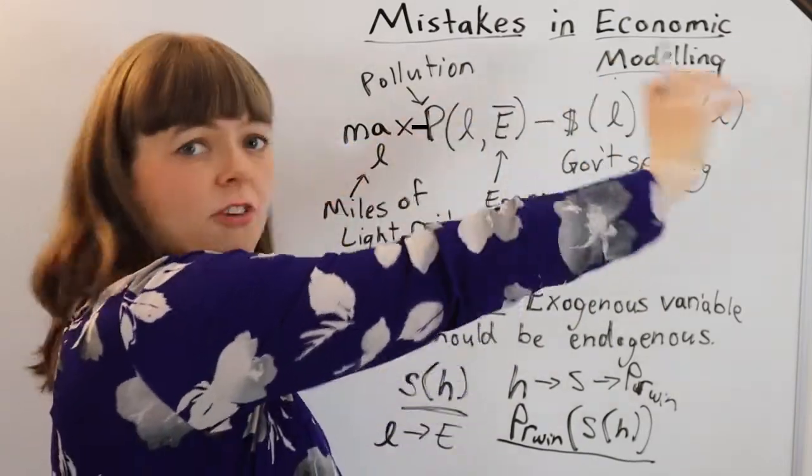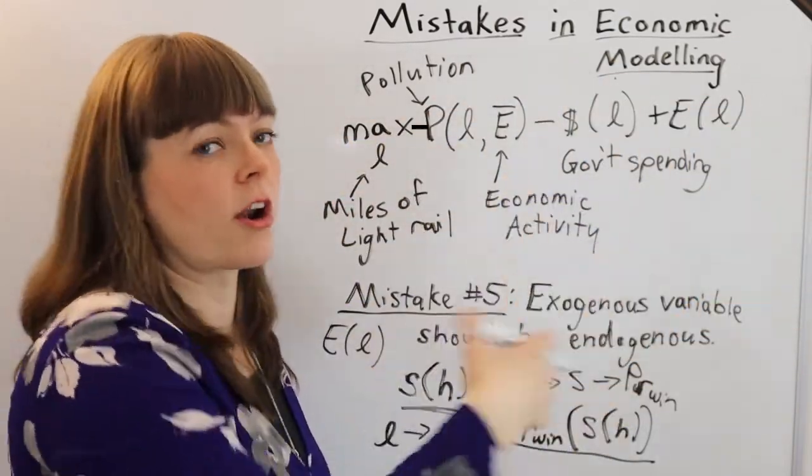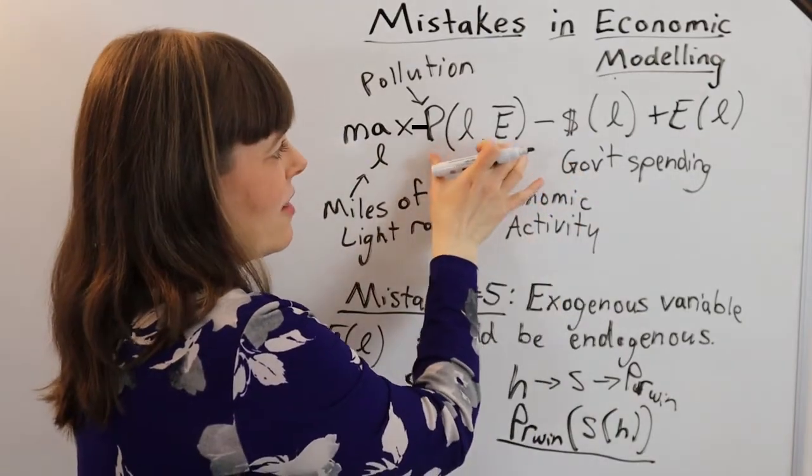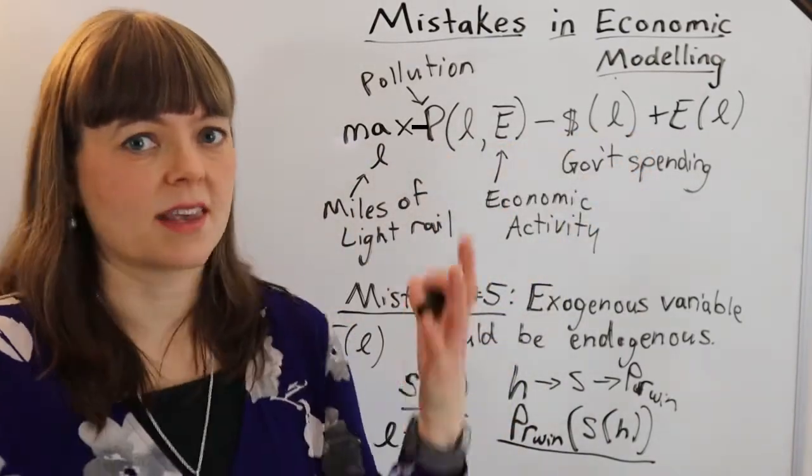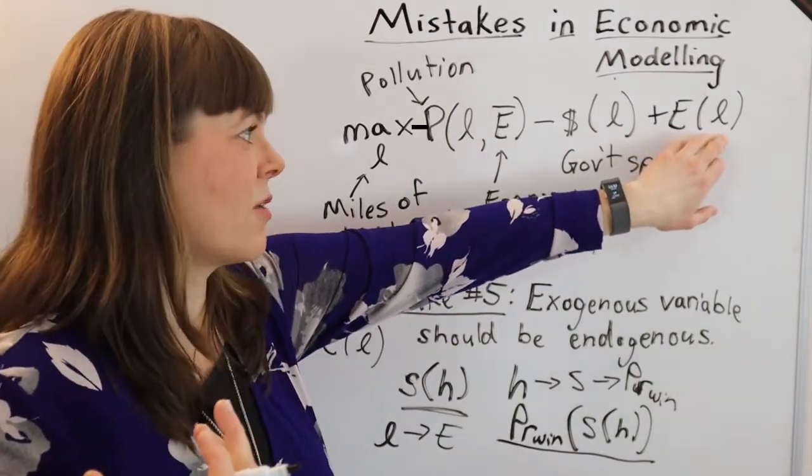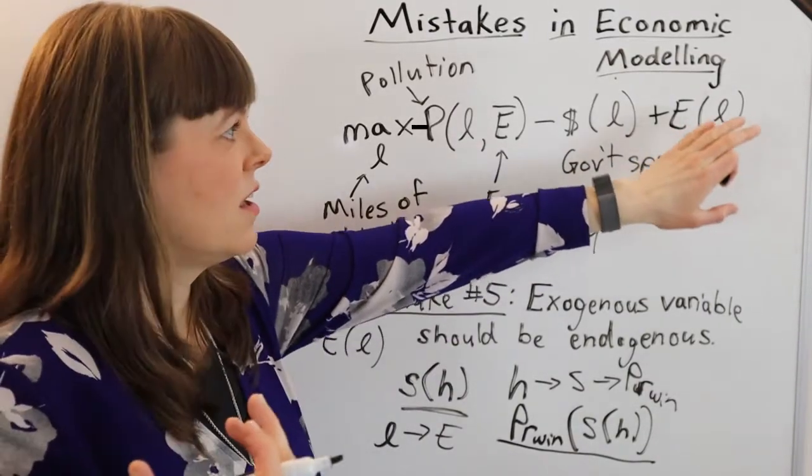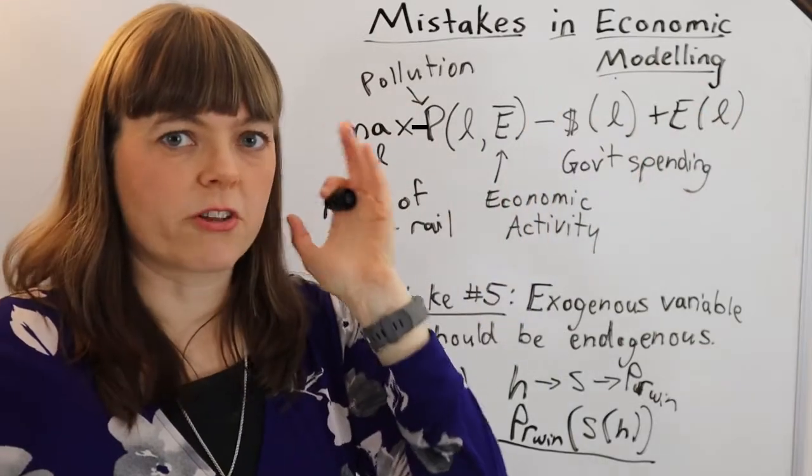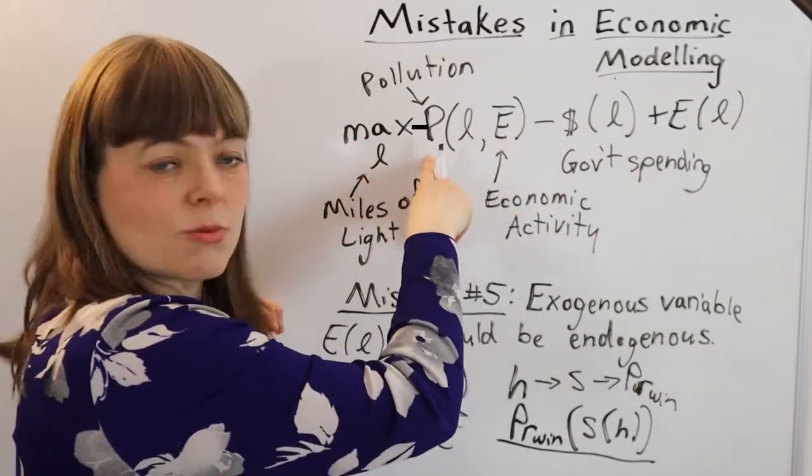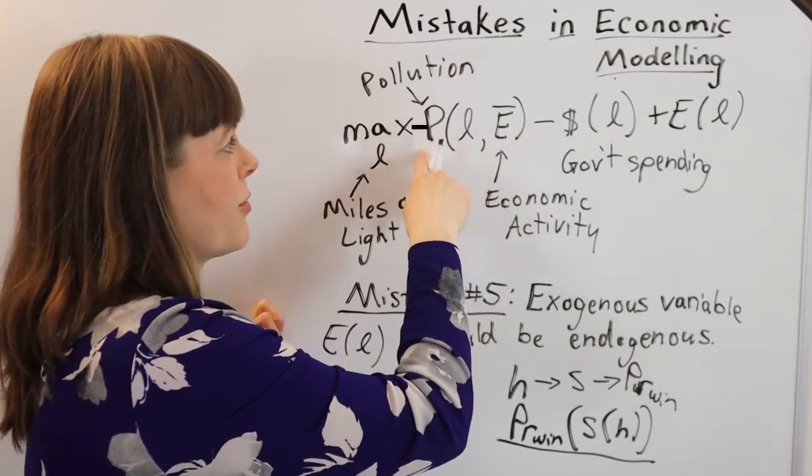But the list of costs and benefits could go on and on and on forever and ever. By building this model you might decide these are the only two things I want to think about. So even though this definitely depends on light rails, economic activity does, that's not what you're thinking about, but you do want it as an exogenous variable inside this one because this will influence that.